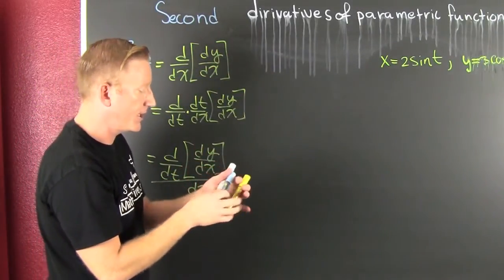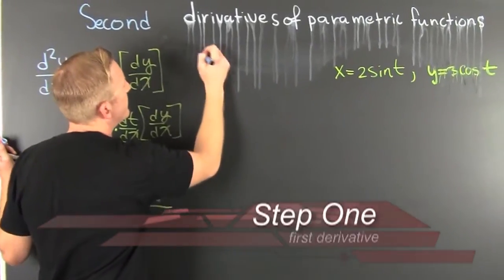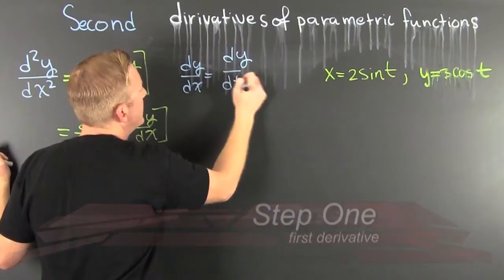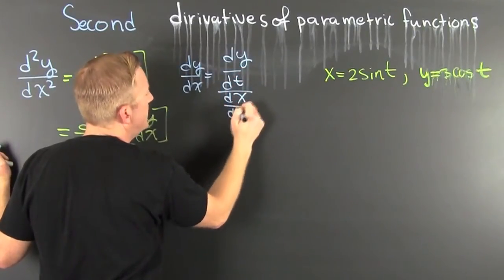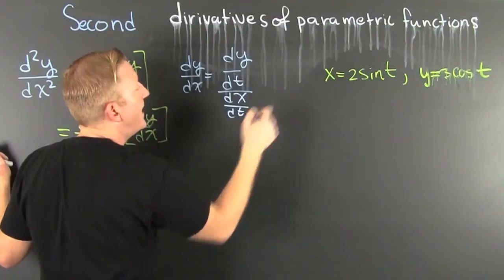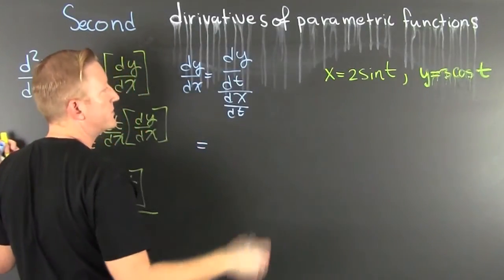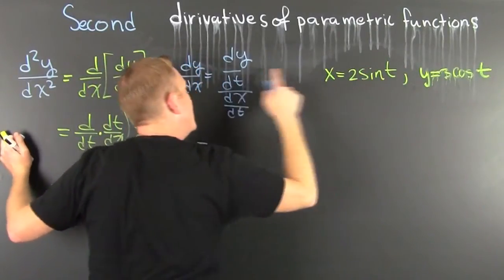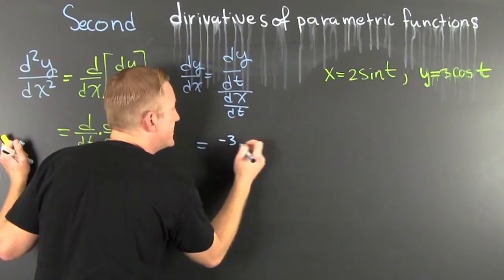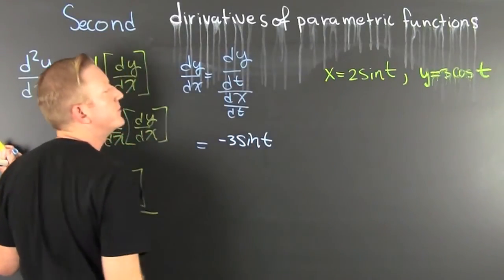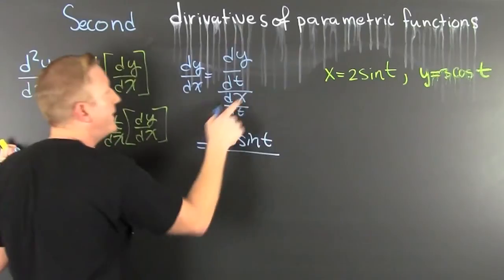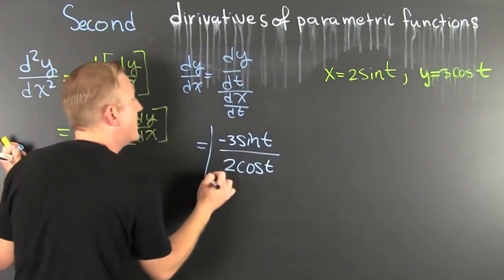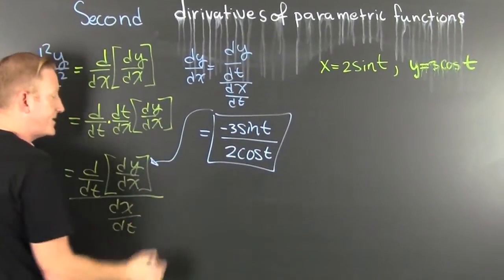We need the first derivative. dy/dx equals dy/dt divided by dx/dt. We have nice tame trigonometric functions. The derivative of y with respect to t is minus 3 times the sine of t, divided by the derivative of x with respect to t, which is 2 times the cosine of t. And we have found that first derivative.